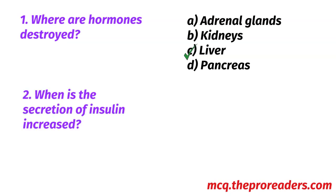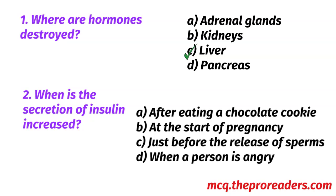When is the secretion of insulin increased? A. After eating a chocolate cookie. B. At the start of pregnancy. C. Just before the release of sperms. D. When a person is angry. Option A, after eating a chocolate cookie, is the correct answer.